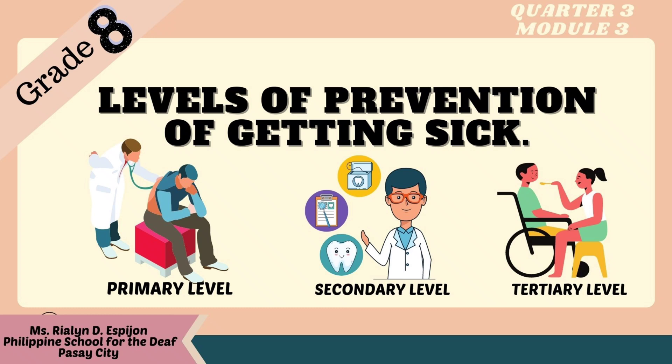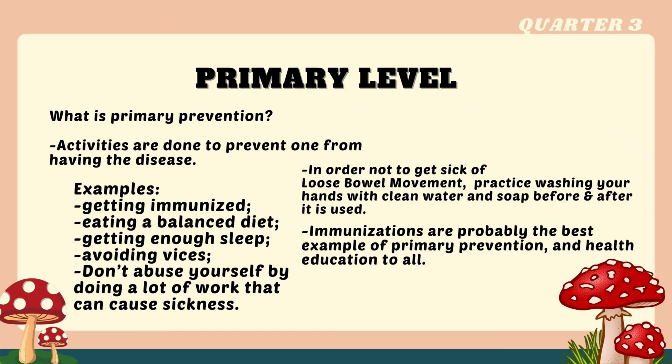Levels of prevention of getting sick. What is primary prevention? These activities are done to prevent one from having the disease. Examples include getting immunized, eating a balanced diet, getting enough sleep, and avoiding vices.